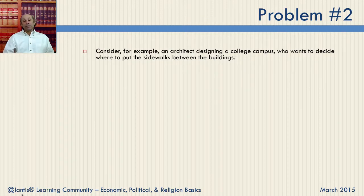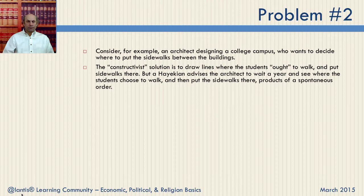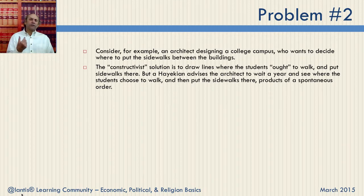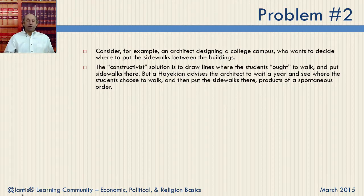Consider an example of an architect designing a college campus — this is actually from the University of Maryland, when we did a tour there — who wants to decide where to put the sidewalks between the buildings. The constructivist solution is to draw the lines where the students ought to walk and put the sidewalks there. But a Hayekian advises the architect to wait a year to see where students choose to walk and then put the sidewalks there, products of a spontaneous order. That makes perfect sense, and in fact that's the way they did it at the quad at University of Maryland, which is why the sidewalks are all over the place.